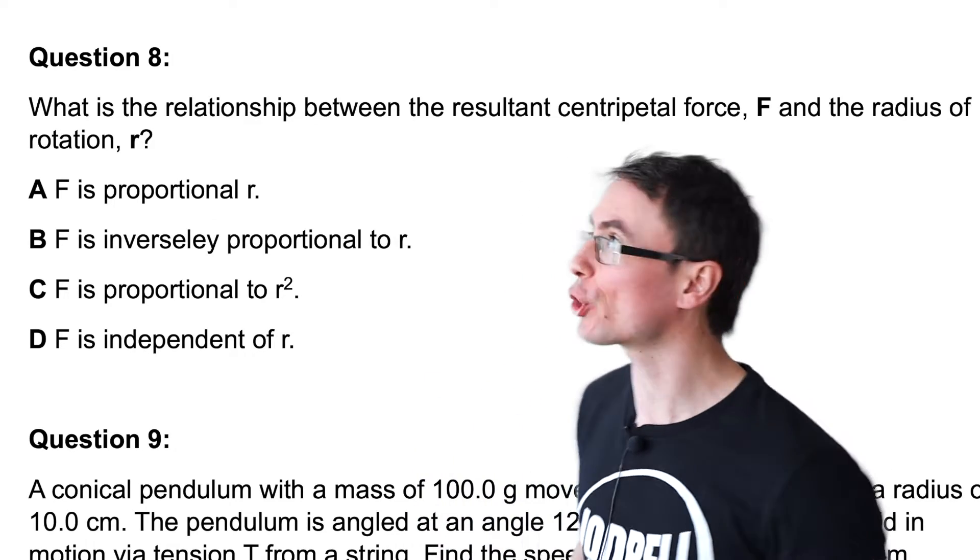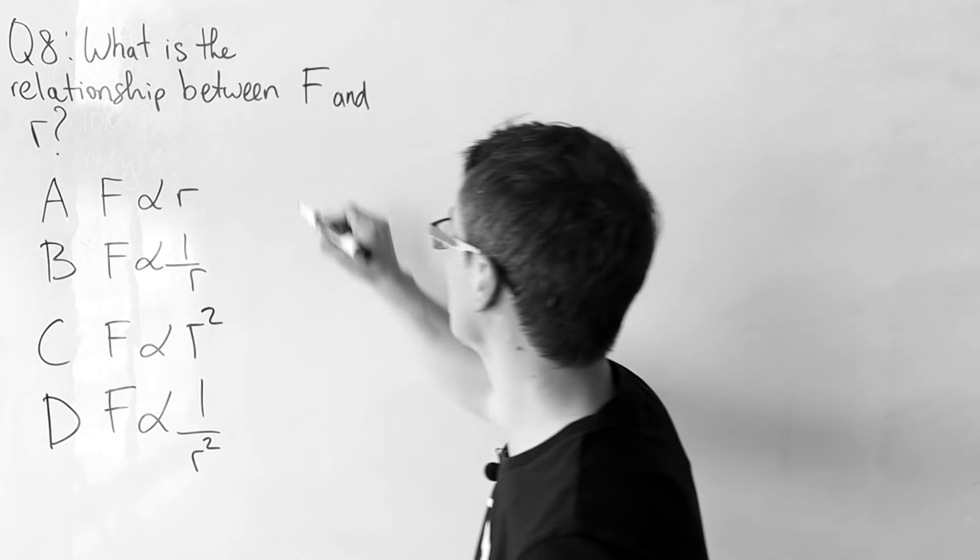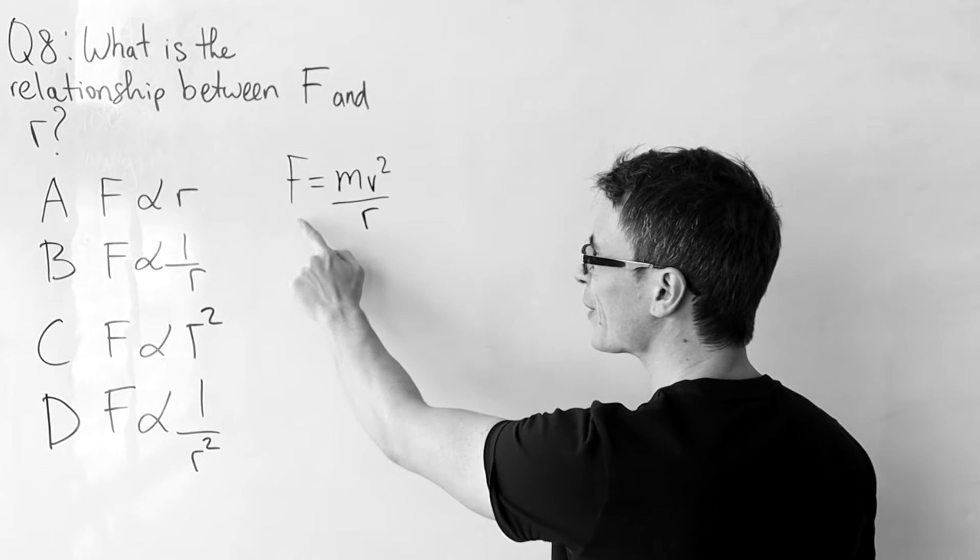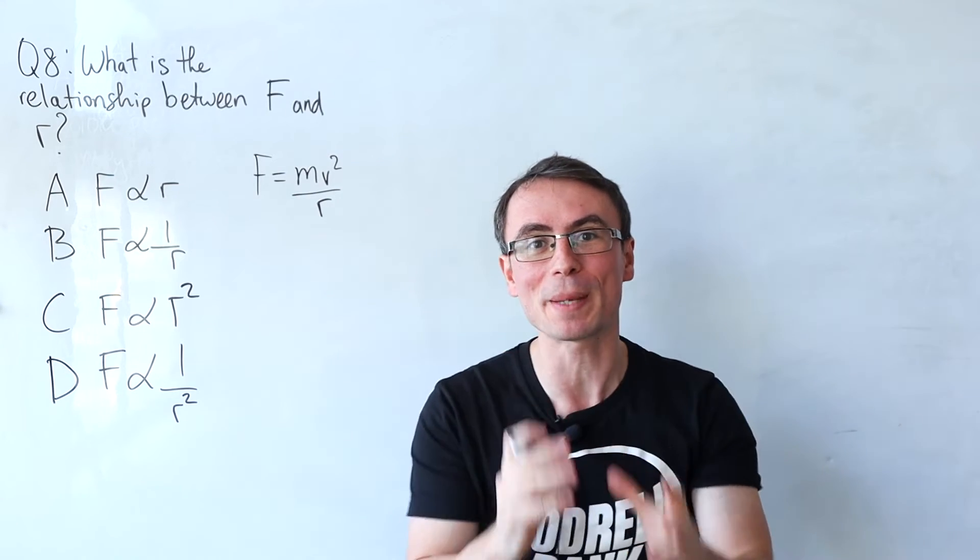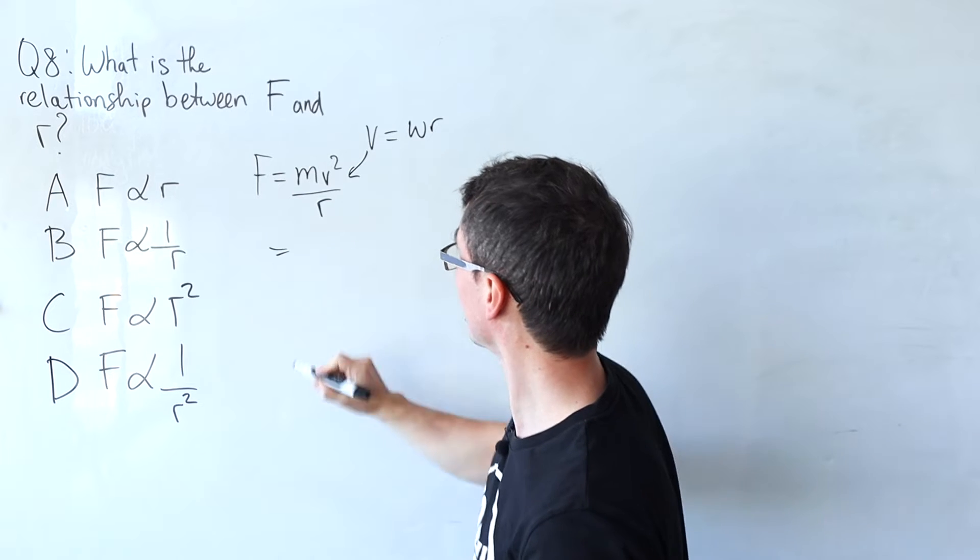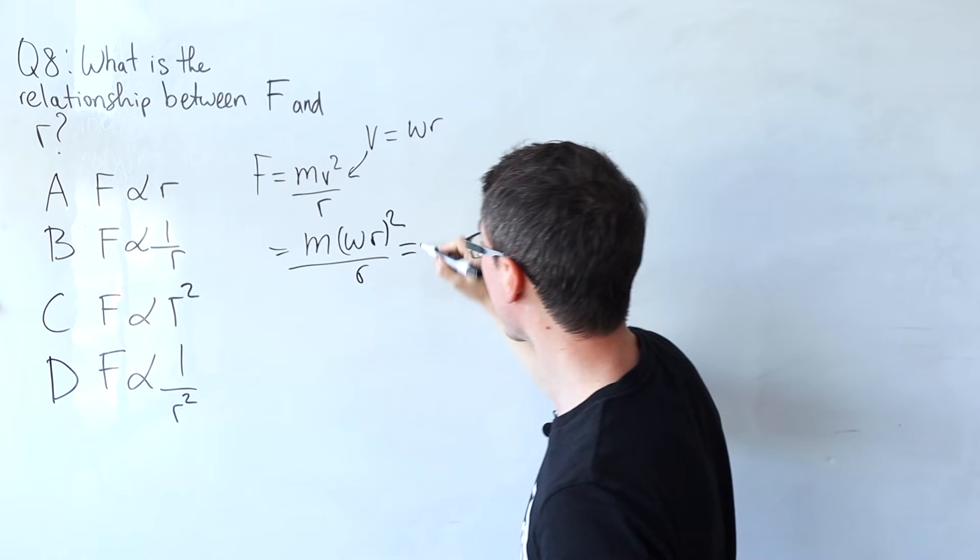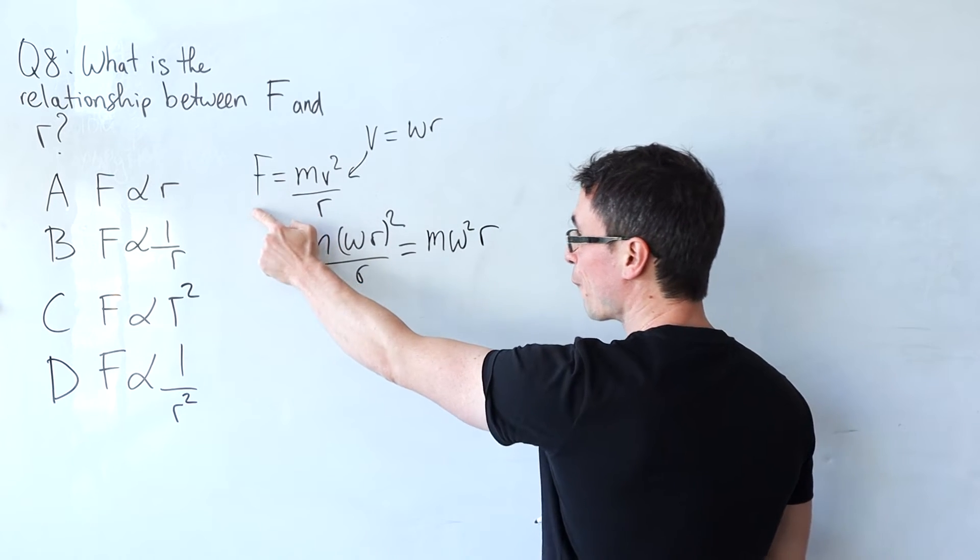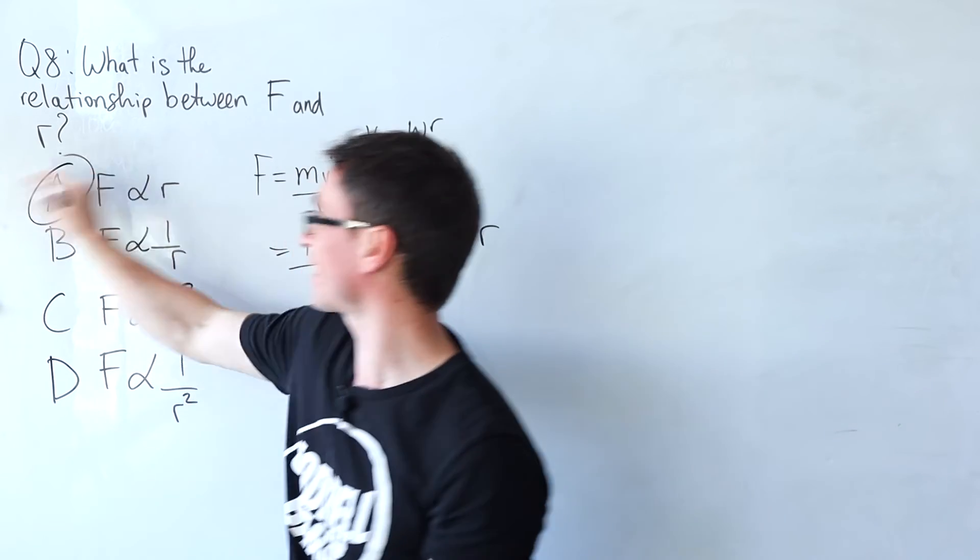Question eight: what is the relationship between the centripetal force f and the radius r? Well lots of people will incorrectly write that f equals mv squared divided by r and just say that f is inversely proportional to the radius, but remember v also depends on r. Since v equals omega r we can substitute that into this equation to get m omega r squared divided by r which is just equal to m omega squared times r, so the force is directly proportional to the radius of rotation r. Correct answer is a.